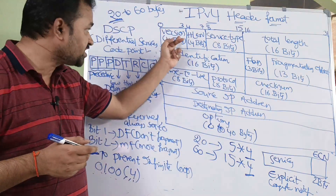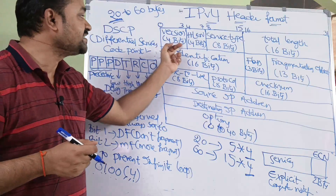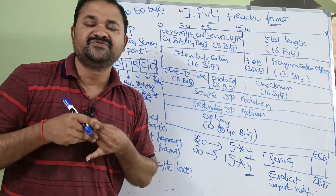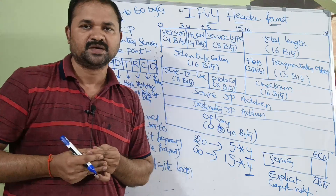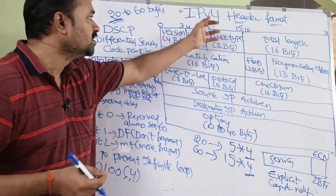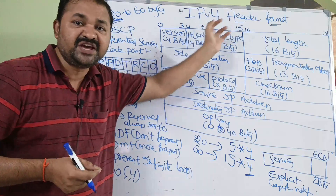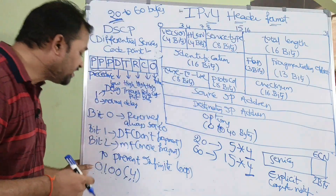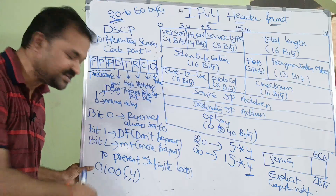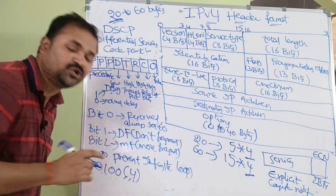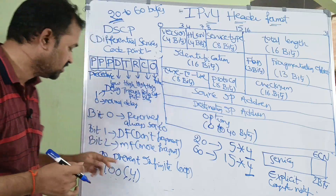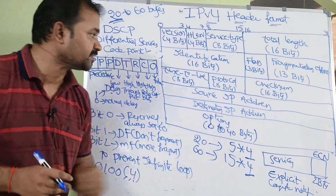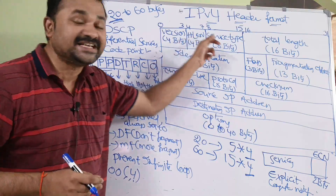The first field is the version field, which is of size 4 bits. The version field specifies which version we are currently using. Here we are using the 4th version. V4 specifies version 4. How we can represent 4 in binary notation? It is 0100. So totally we need 4 bits here. And the next one is HLAN.